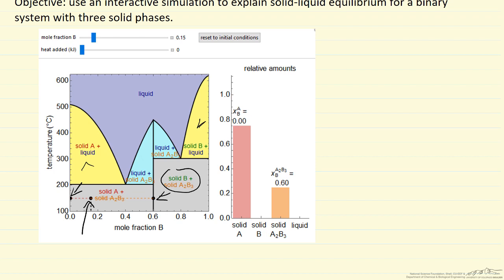So let's look at the interactive simulation. What we're going to be able to change is the mole fraction of B with this slider. And then we can change the amount of heat added. We're set up to change the amount of heat added as opposed to changing temperature, because at certain points we can add heat and the temperature does not change.